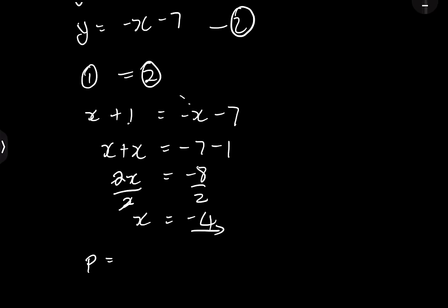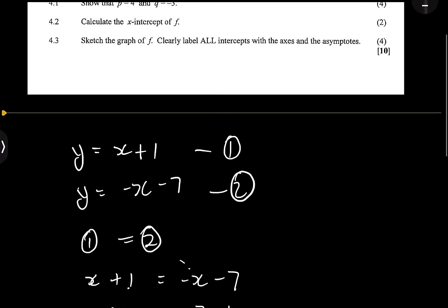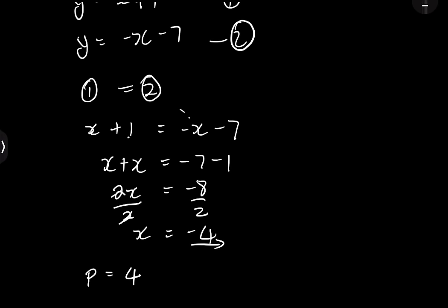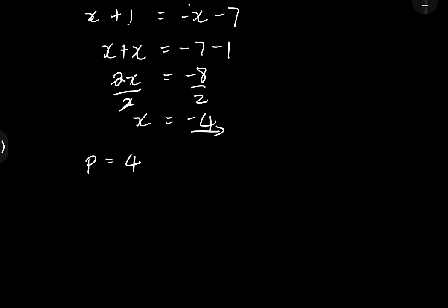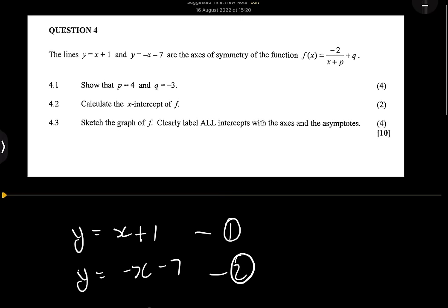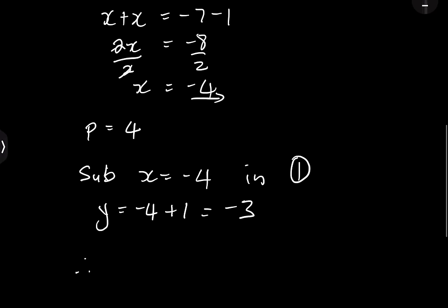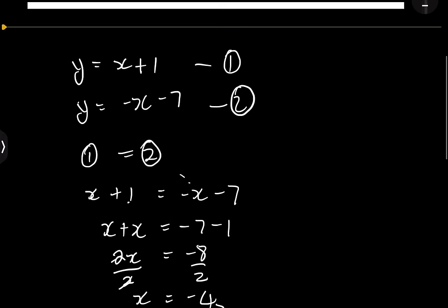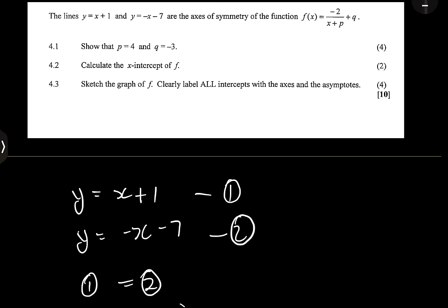Now keep in mind that the x-value of your asymptote always changes sign when you put it into the equation. So our asymptote is x = -4, however when we place it into the formula we say p = positive 4. The q value retains its value. To find q, we substitute x = -4 into equation one: y = (-4) + 1 = -3. Therefore f(x) = -2 / (x + 4) - 3.